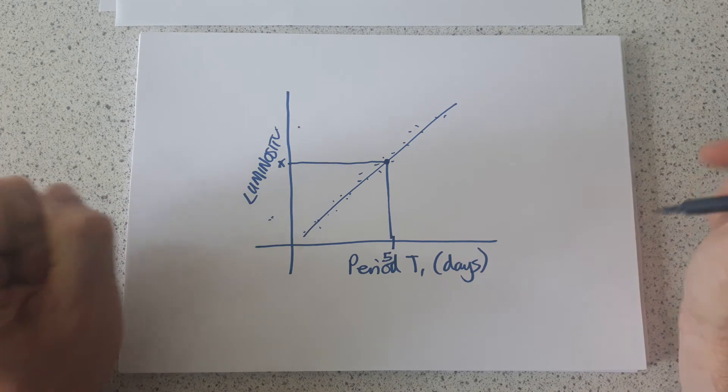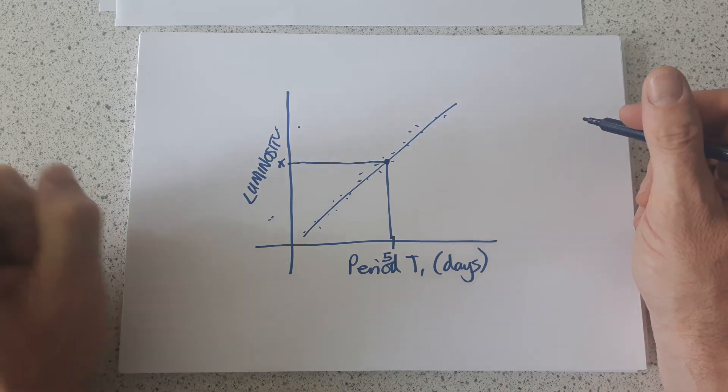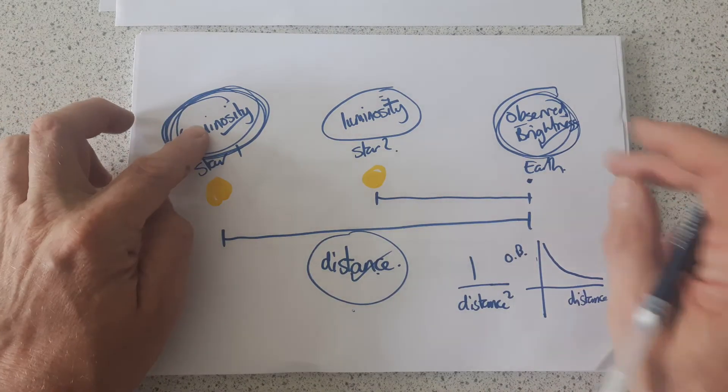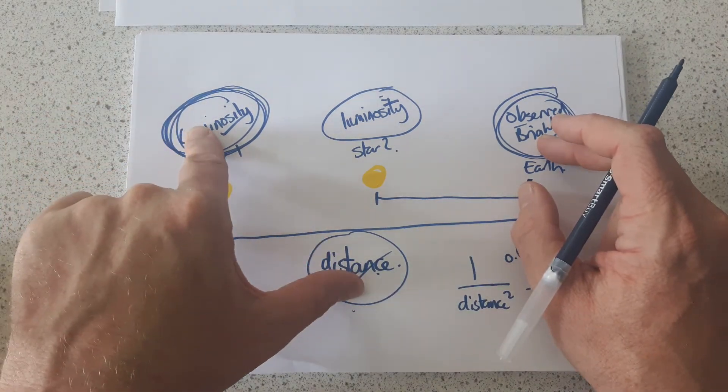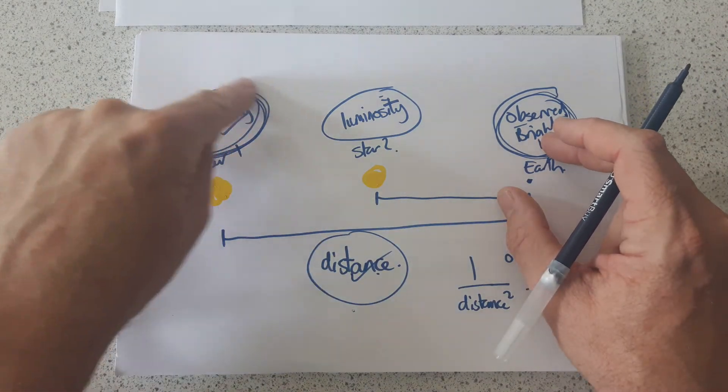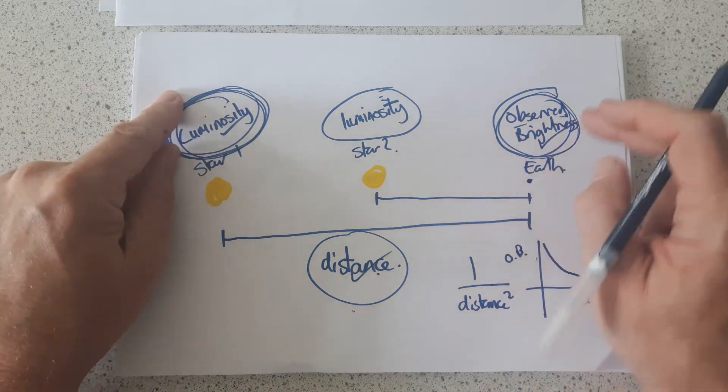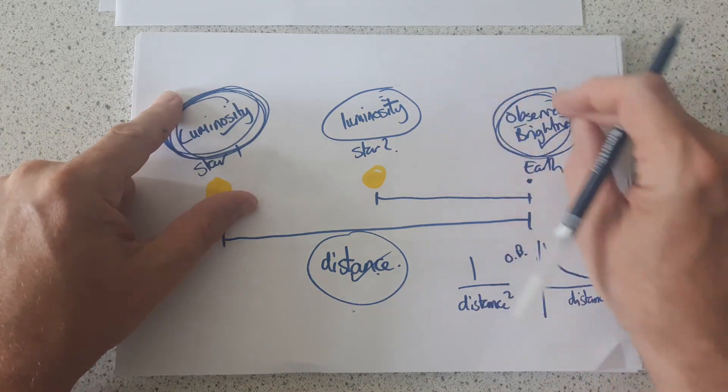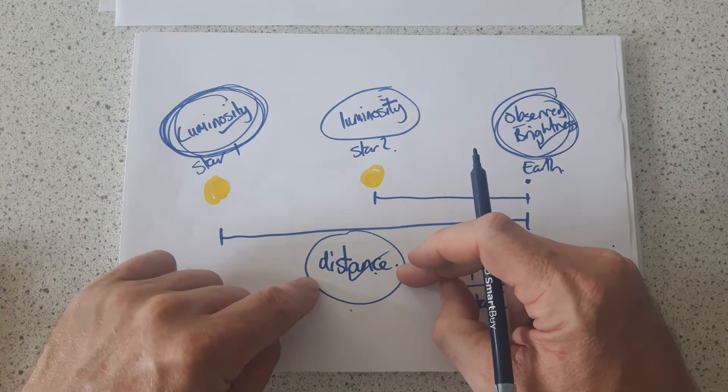Now this is incredibly important because what it means is, going back to our original idea, that the luminosity, the observed brightness, and the distance are linked. If you can find the luminosity of the star, and then you measure the observed brightness from Earth, you can then calculate the distance away.